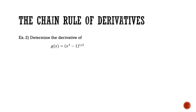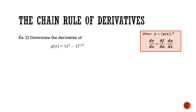Determine the derivative of g(x) is equal to x cubed minus 1, all to the power of one half. Let's see if the chain rule works here. With the chain rule, we have some function of x — u(x) — all raised to a power n. Here we definitely have something raised to an exponent, and that something is a function of x, not simply x. So the chain rule is perfect here. First, let's define what our u(x) is: u(x) is equal to x cubed minus 1.